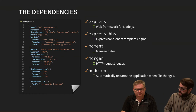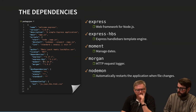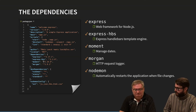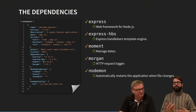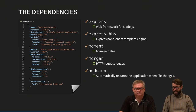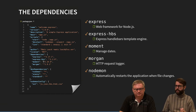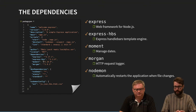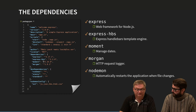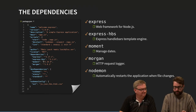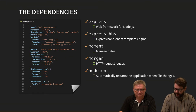We're using express-hbs (Handlebars) as the template engine. There are many handlebar template engines — we chose this one based on community support and activity. When looking for modules, always investigate: is it actively updated? Does it get security patches? Is there a community, or was it developed years ago and hasn't been maintained since? Moment.js manages dates — dates can be a bit of a hazard in JavaScript, and this package helps with that. Morgan is an HTTP request logger middleware.